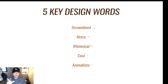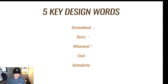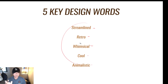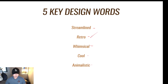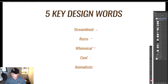Design is a language, and these keywords essentially form the design language we'll use to communicate the design to viewers. It's very important that these words apply only to this IP. When we later look at Star Wars, these words shouldn't apply — if they do, you're heading into gray areas where your design becomes generic and doesn't belong to anyone. The five words for Cowboy Bebop are: streamlined, retro, whimsical, cool, and animalistic.